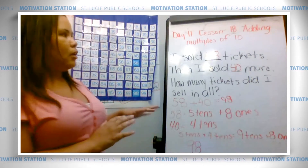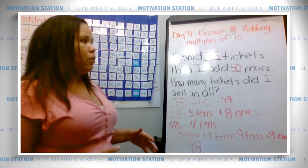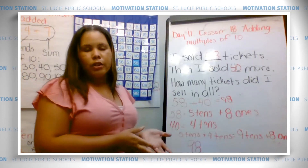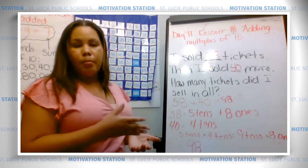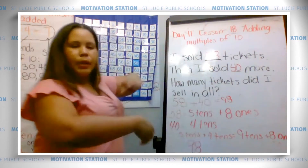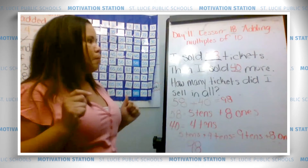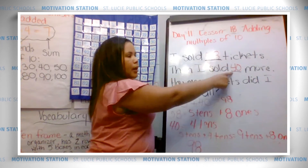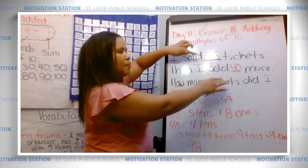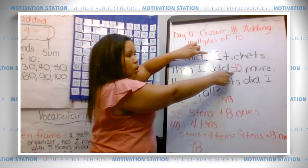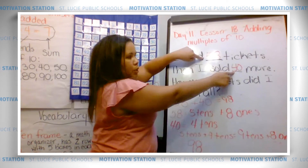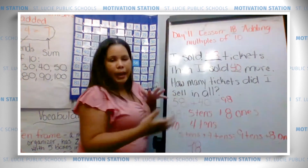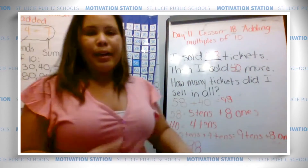Boys and girls, the biggest thing about adding multiples of 10 is to break down our 10s and 1s. That's why on Monday's and Thursday's lessons we were working on showing numbers as 10s and 1s. Once you break them down, you can add your 10-digit and your 1-digit separately. 5 tens plus 4 tens gives me 9, and 8 ones and 0 ones gives me 8 — so mentally I know I'm at 98.